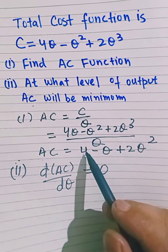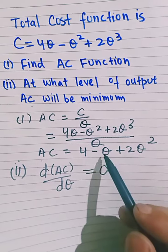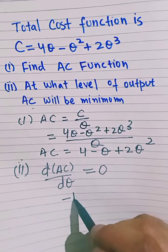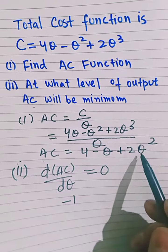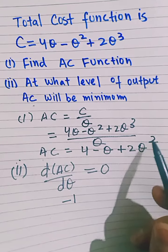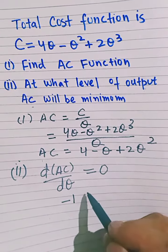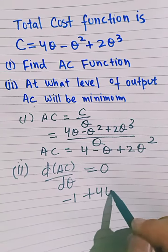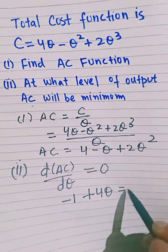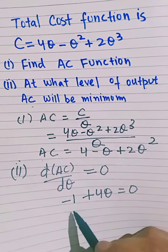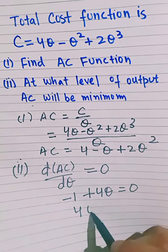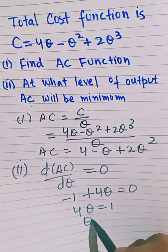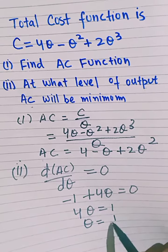The derivative of a constant is 0. The derivative of Q is 1, so we are left with -1. The derivative of 2Q² is 4Q. Setting the derivative equal to 0 gives us -1 + 4Q = 0, which means 4Q = 1, so Q = 1/4.